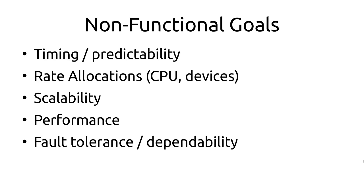Non-functional goals include things like timing and predictability — how different tasks behave within the system in terms of whether they have bounded execution, whether they can complete execution by some fixed amount of time or some deadline. They could refer to things like rate allocations: is the CPU scheduling within the system abiding by certain properties? Scalability — is the application scalable when deployed onto a given system with a given kernel? And performance — are we actually getting the performance that we want?